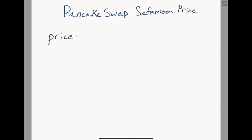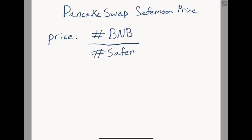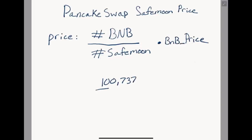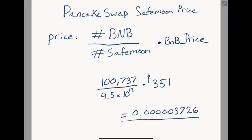To find the price, we need to find the ratio of SafeMoon to BNB in the pool. This is as easy as dividing the number of BNB by the number of SafeMoon — the result is the ratio of how many BNB there are to every SafeMoon token. We then multiply this result by the price of BNB to get an answer of $0.000003726, which is exactly correct when I did this math on June 8th. Right now large sell-offs affect the price drastically, but SafeMoon is still young and its liquidity pool has more room to grow.